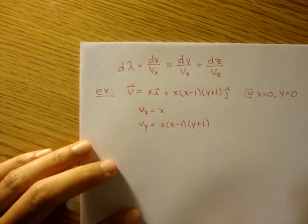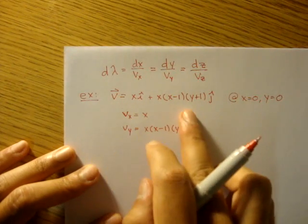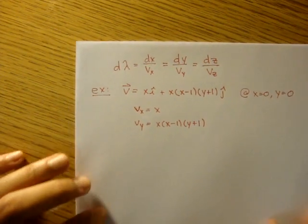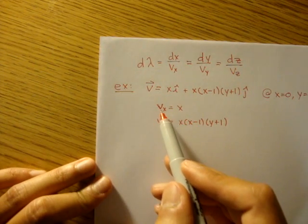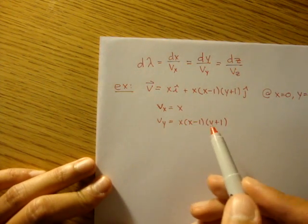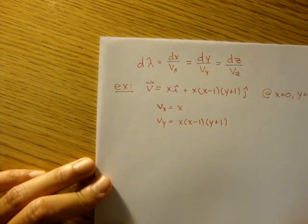There's no z component. Obviously, this is a two-dimensional flow. And we have vx is equal to x, vy is equal to x times x minus 1 times y plus 1.